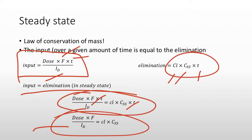This equation says input equals output — what's going in equals what's going out. How much mass was given, times the bioavailable fraction, divided by the dosing interval, equals clearance times the steady state concentration. I think through it as: how much was given, what fraction was absorbed, over what dosing interval — that equals clearance times concentration.